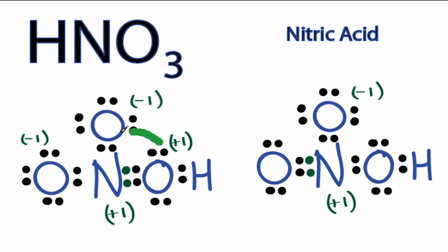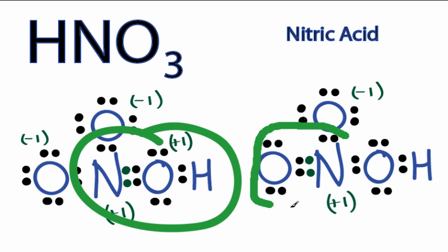So over here, now the double bond is between the nitrogen connected to the OH. Where over here, the double bond is just the oxygen and the nitrogen.